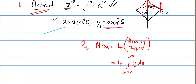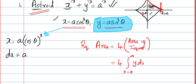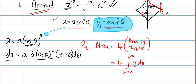We have x = a(cosθ)³, so dx = 3a cos²θ · (−sinθ) dθ, applying the chain rule. Now, the limits are in terms of x, so we need to convert them to theta. From x = a cos³θ, we get cosθ = (x/a)^(1/3), so θ = cos⁻¹((x/a)^(1/3)).